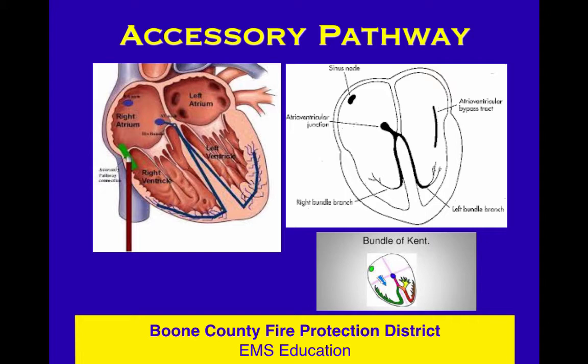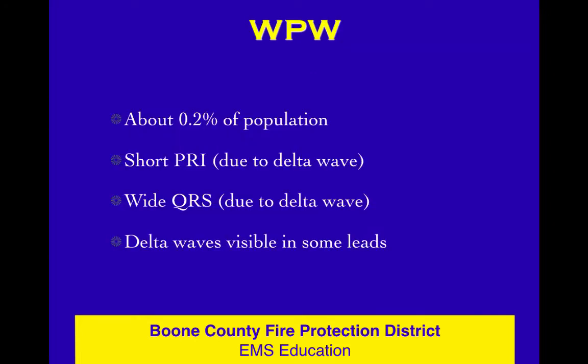The PRI is supposed to represent when the impulse is slowing through the AV node, the AV junction, the bundle, and the branches — it's supposed to be taking up some time there. But if that never gets to happen, the impulse just jumps straight across, and you're not going to have much PRI. So you have that slurred upstroke — that delta wave — and that's pretty much classic for an accessory pathway.